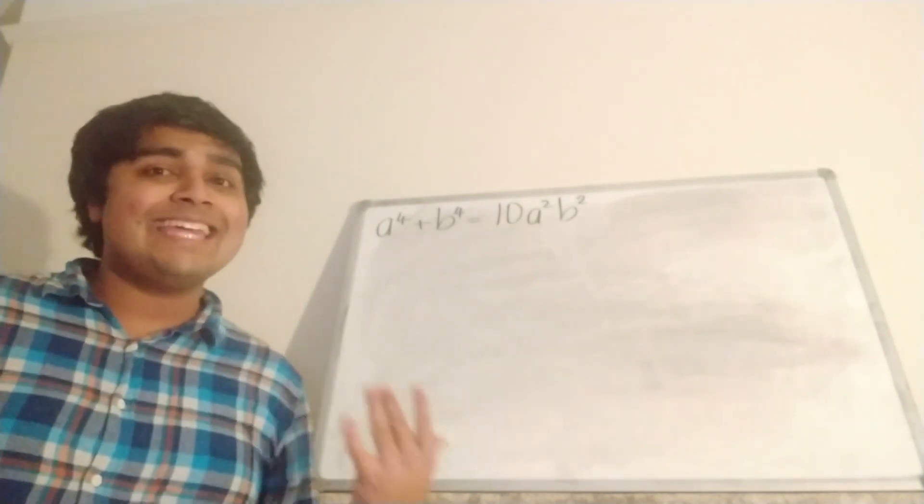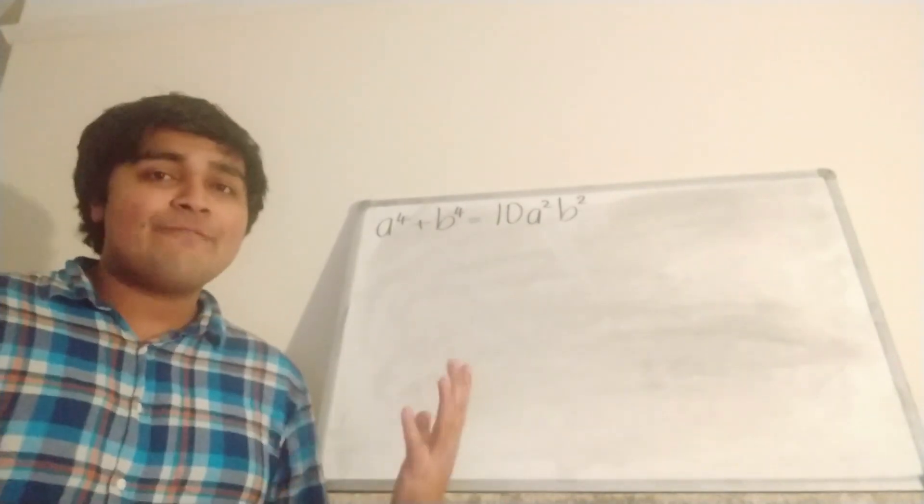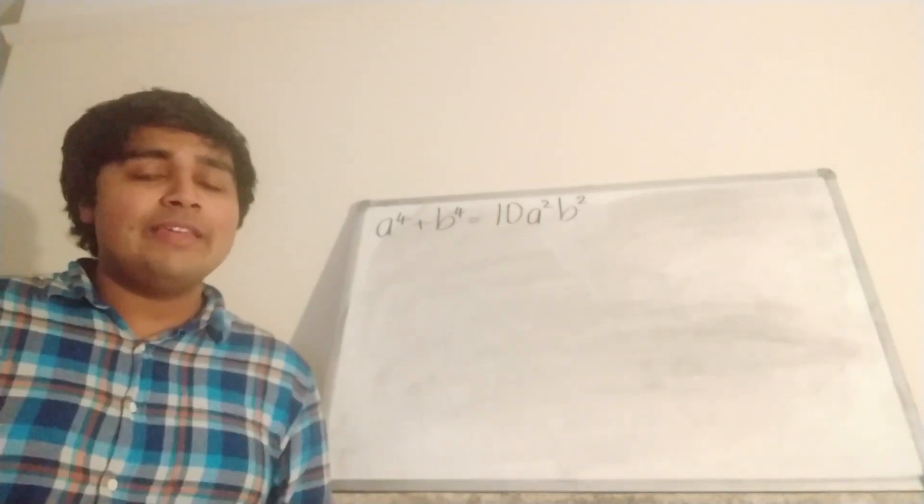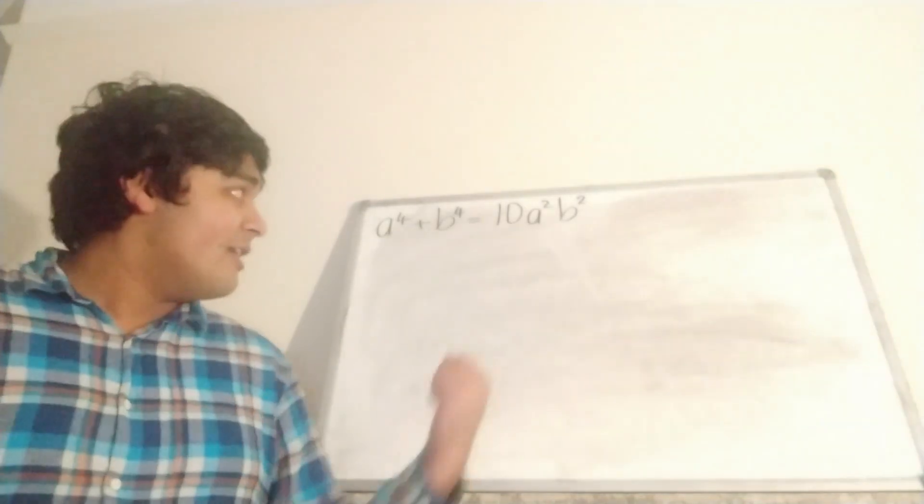But remember, if we go back to the start, we said that A and B are coprime. So combining those two pieces of information, it follows that neither A nor B are multiples of 3. So neither A nor B are multiples of 3.